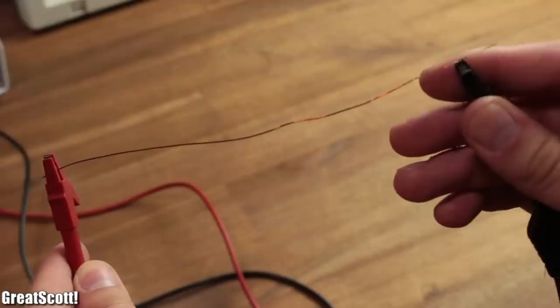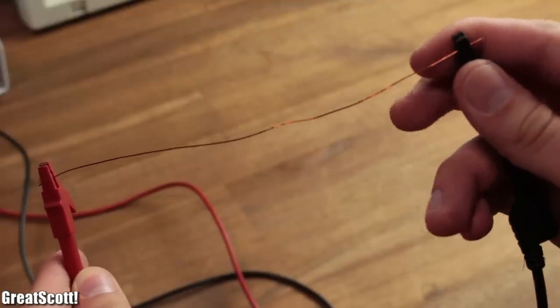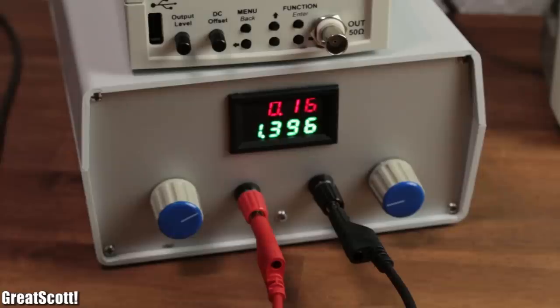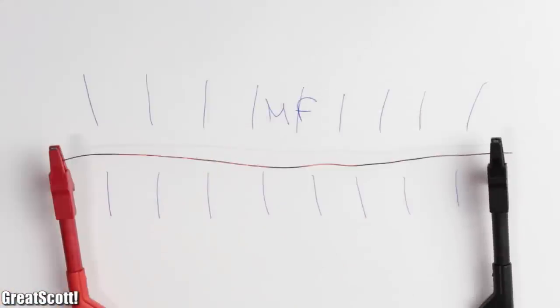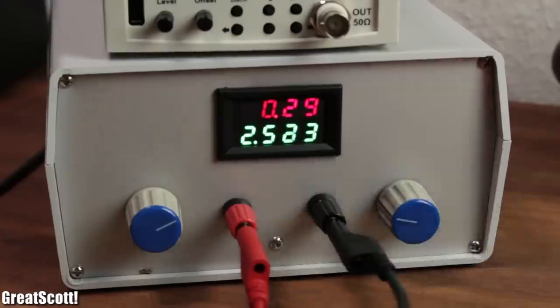First of all, let's get one foundation straight. When current flows through a wire, it creates a magnetic field around it.